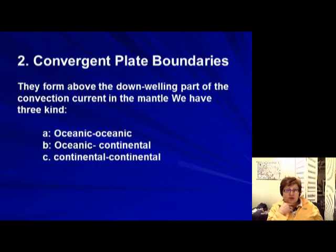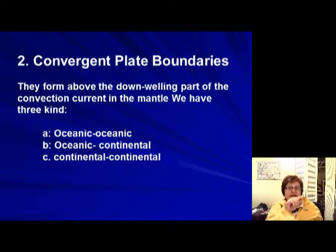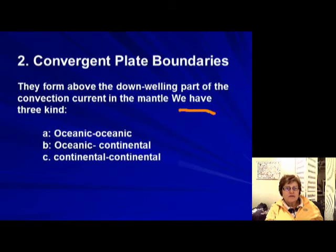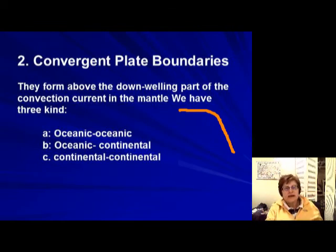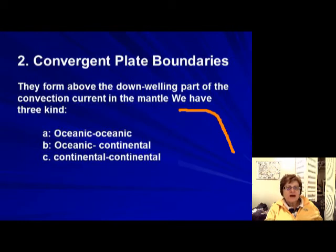Now we move to convergent plate boundaries, which form above the downwelling part of the convection current — where the denser, colder material moves down. There are three cases depending on what kinds of plates are meeting: oceanic-oceanic, oceanic-continental, and continent-continent plate boundaries.